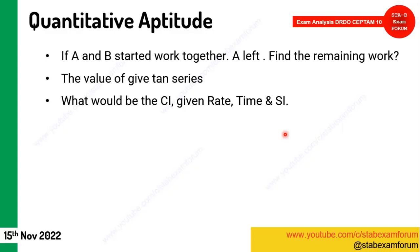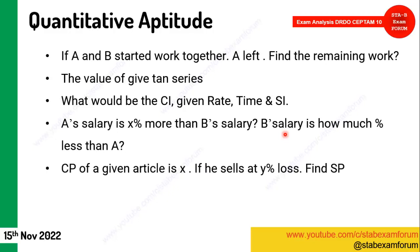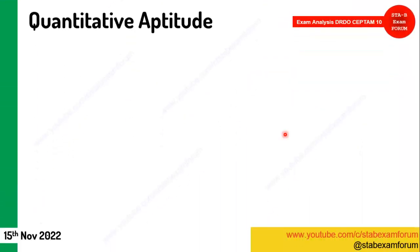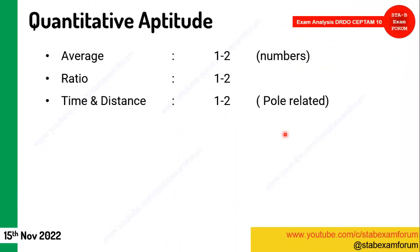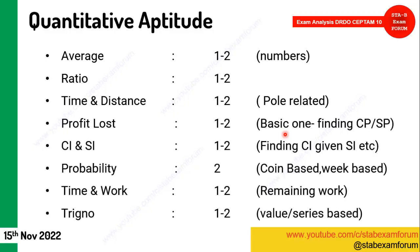Compound interest and simple interest questions are repeatedly coming in the DRDO CEPTAM exam. One question on percentage: if salary A is x% more than B, what would B's salary be less than A? From profit and loss — find SP from given CP and loss percent. From coordinate geometry — find distance between a line and a point. Around 12 questions came from quantitative aptitude.